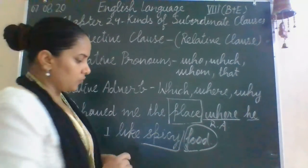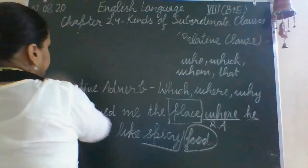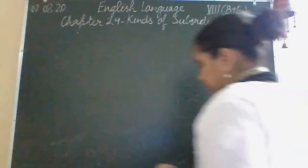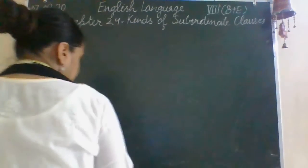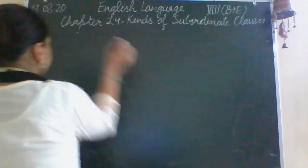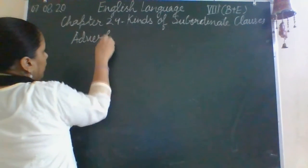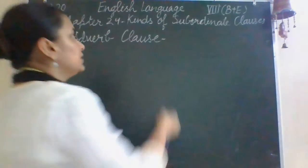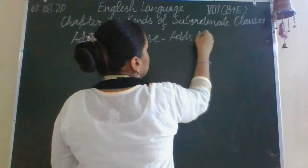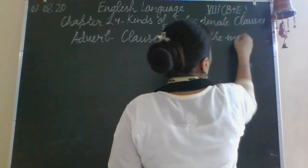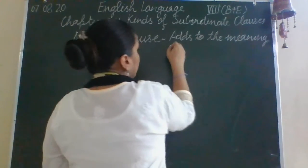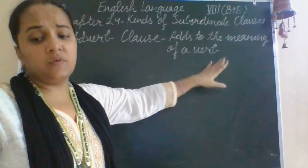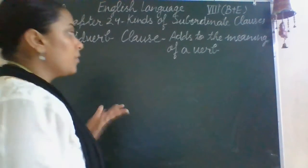Now we will move towards the third type, which is the adverb clause. The adverb clause also modifies or describes, but it is usually about verbs — as we have learnt in the case of a simple adverb as a part of speech. An adverb clause adds to the meaning of a verb, and sometimes an adjective or adverb.